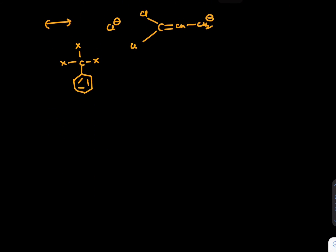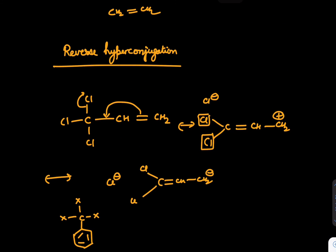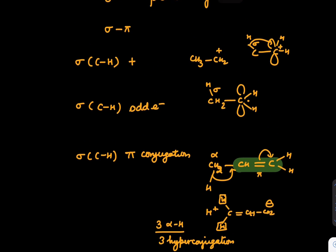Now see, if the question is given as what kind of overlapping it is - sigma pi, sigma pi electron, or pi pi - you should be able to understand. In the first case it was sigma C-H plus, second case was sigma C-H odd electron, third case is sigma C-H pi conjugation. I hope you understood this complete example.